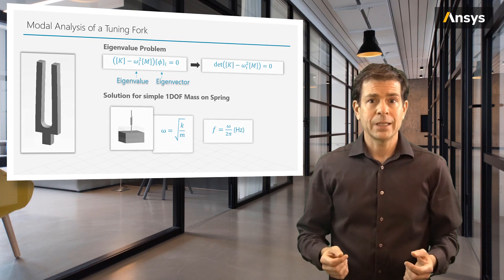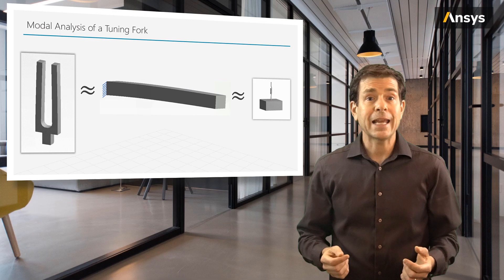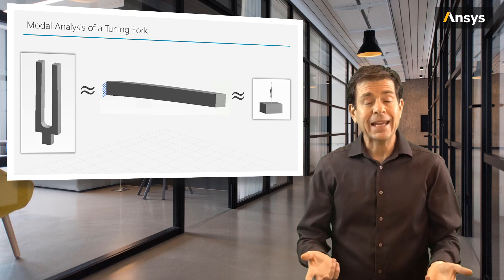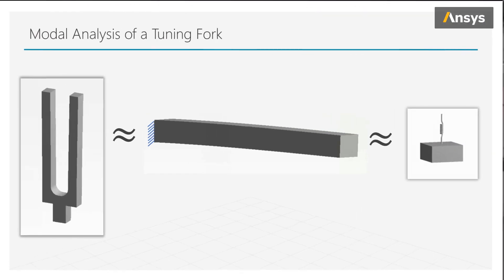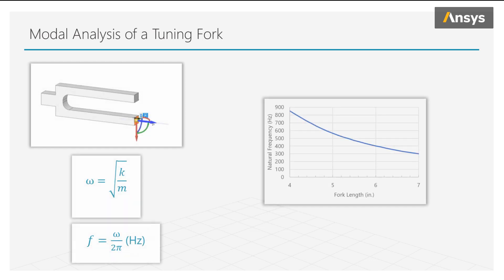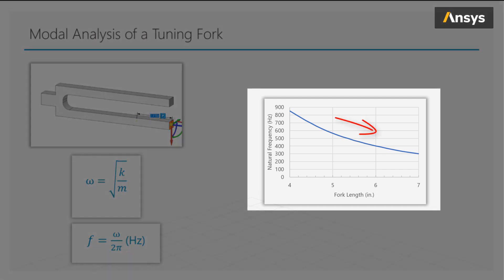Getting back to our tuning fork, it is not a single degree of freedom system, but we can think of it like a cantilever beam, where the beam is bending and acts like a simple spring, and the mass of the beam is the mass hanging on that spring. A cantilever beam is fixed on one end and free on the other. A long beam will deflect more than a short beam, so a long beam is less stiff. If we make the fork arms longer, the stiffness k decreases, and the natural frequency omega will decrease with decreasing stiffness k. So making our tuning fork longer results in lower natural frequencies, and that's exactly what we see from the simulation results in this graph, which shows how the length of the fork and the resulting natural frequencies vary.